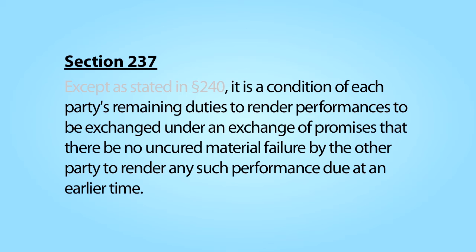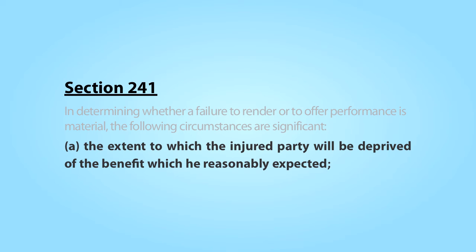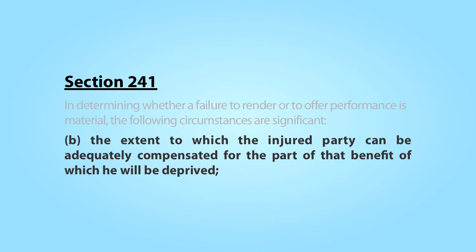Accordingly, for purposes of Section 237, the critical issue is when a breach is considered to be material. This issue is addressed in Section 241 of the Restatement. Subpart A embodies the concept of materiality: a breach of promise is material if that breach affects the heart of the bargain — if the failure undermines the non-breaching party's achieving the very purposes and expectations that induced that party to enter into the contract in the first place. Subpart B suggests that if simple monetary damages can compensate the other party for the breach that occurred, that failure is less likely to be considered material.